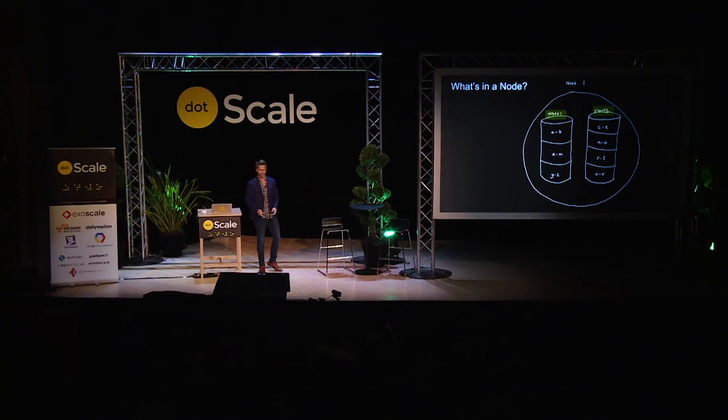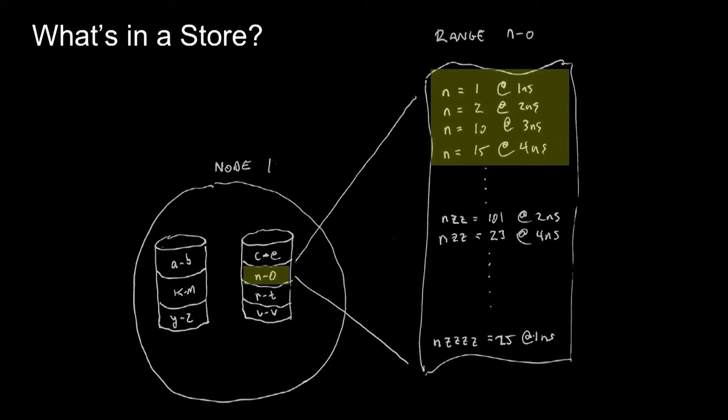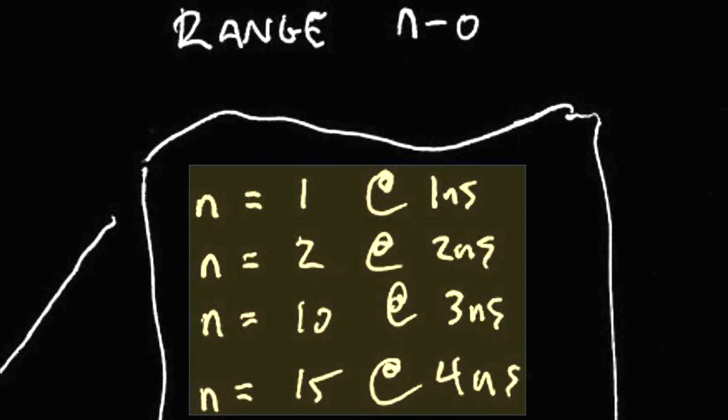What's in a node? A node corresponds to a physical or virtual machine, something like an EC2 instance. Each node can have any number of stores, usually at least one. Stores contain segments of the larger monolithic key space, which we call ranges. For example, there's a range on store 2 from key N to key O. If we look at it, there are four different values or versions for key N — we have an MVCC model where you can store multiple versions for any particular key at different timestamps.